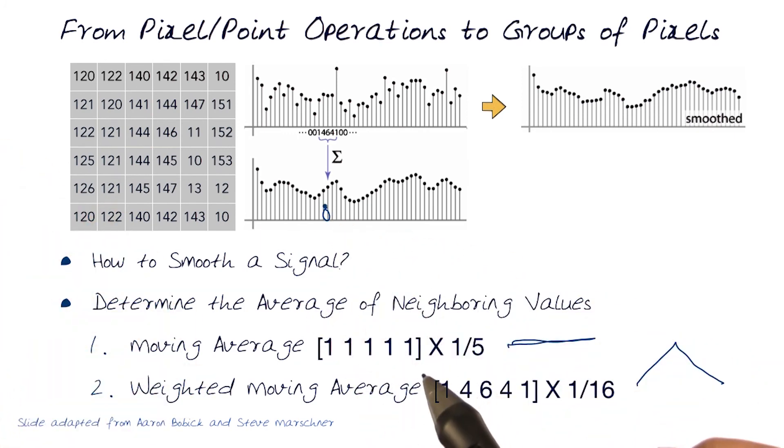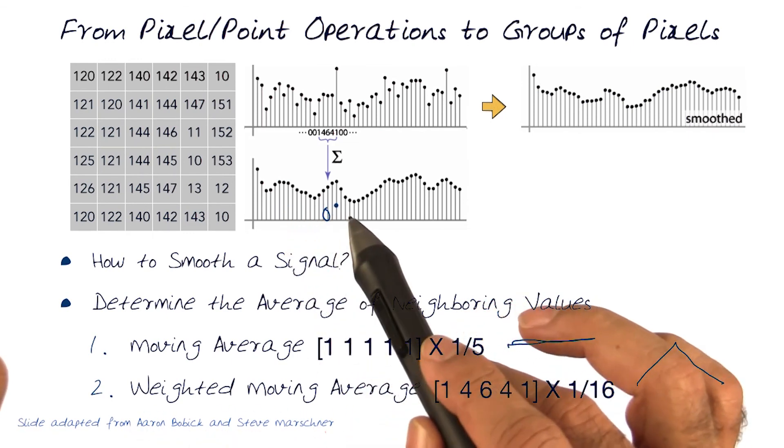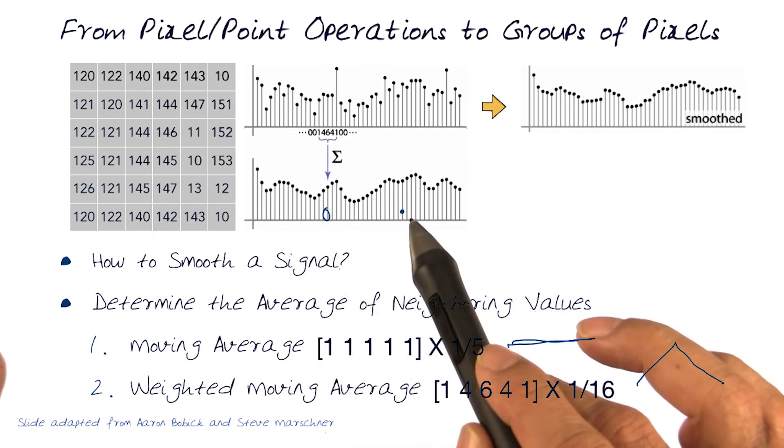And this allows me to do smoothing in different ways. And again, these are moving averages and move from one pixel to the other and start doing this. And again, I'm showing this in a simple 1D example.